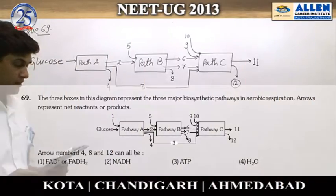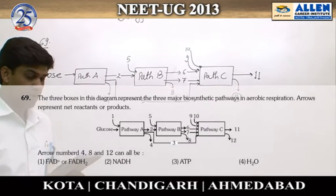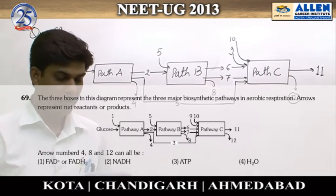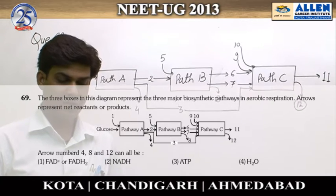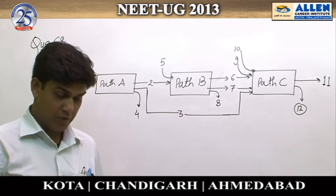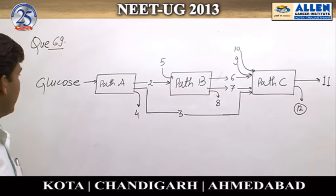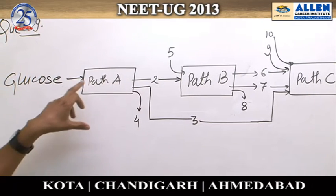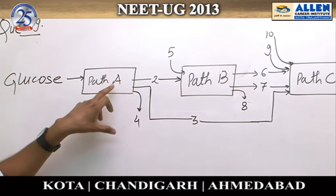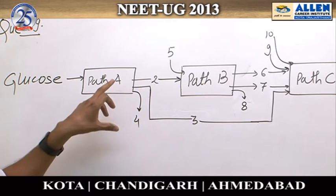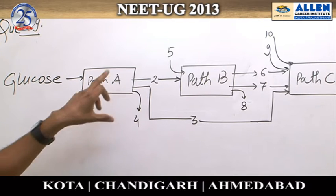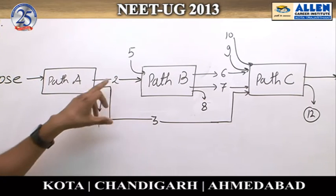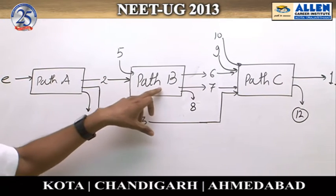Question number 69: the three boxes in this diagram represent the three major biosynthetic pathways in aerobic respiration. Arrows represent the net reactants or products as per the scheme given. Glucose goes through path A. As we know, glucose is the substrate for glycolysis, so path A represents glycolysis. Glycolysis gives rise to products number two, three, and four.